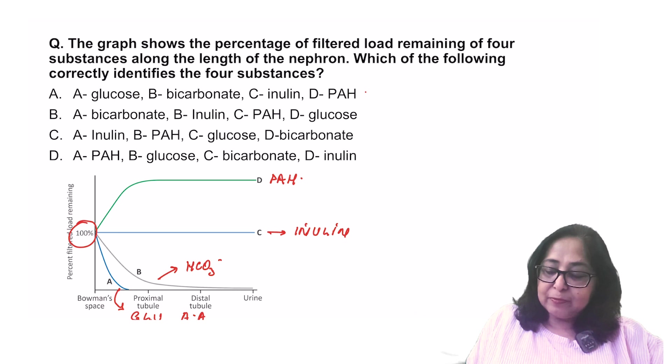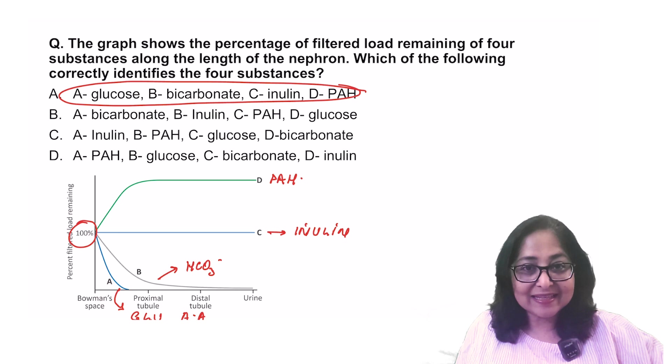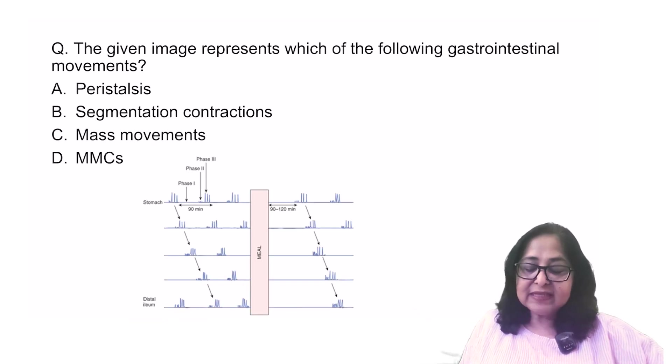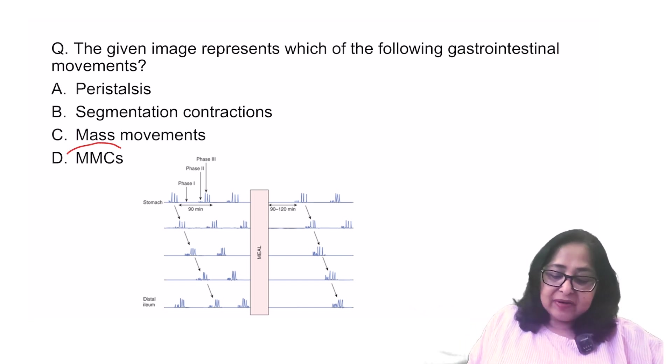So here my answer is A. Glucose, B. Bicarbonate, C. Inulin and D. Paraaminohipuric acid. The given image represents which of the following GI movements? Is it going to be peristalsis, segmentation, mass movements or migrating motor complexes?